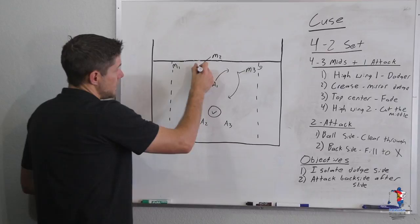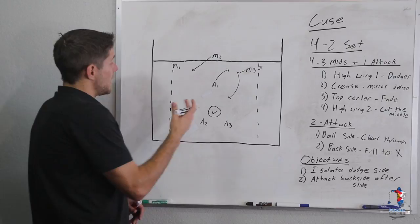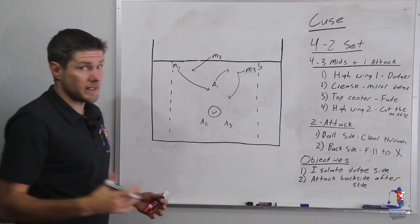The next rule is the top center player. His job is always to fade backside and to prepare for the second dodge in our set.